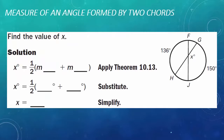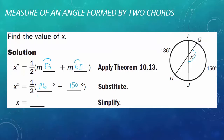Example 2: Find the value of X. In this circle, two chords are intersecting inside the circle. Using Theorem 10.13, the measure of angle X is one-half the sum of its intercepted arc GJ and its vertical angle arc FH. So X equals one-half of (136 plus 150). 136 plus 150 equals 286, and half of 286 is 143. So X is 143 degrees.